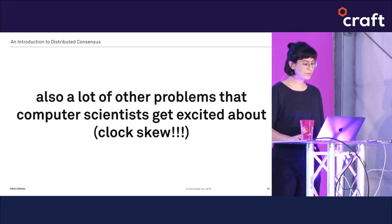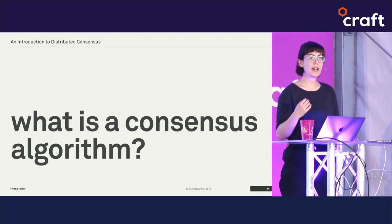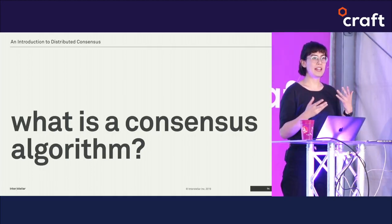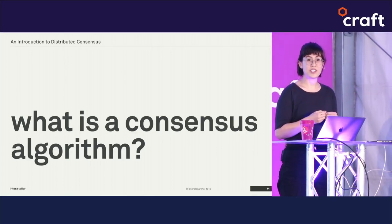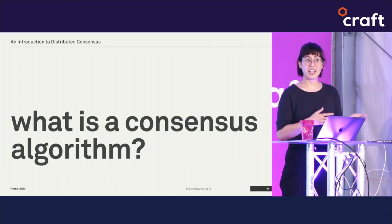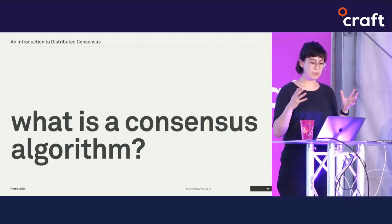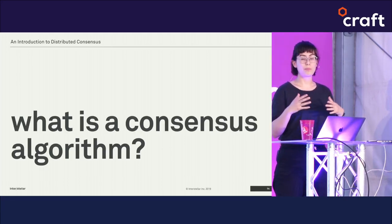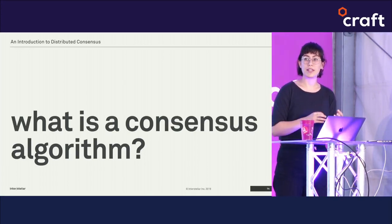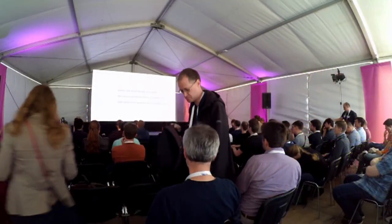Broadly speaking, consensus algorithms are the solution to this problem. At this point you might have an intuitive "know it when you see it" definition of a consensus algorithm, just as you might for blockchain or cloud. There are narrower or broader definitions of the consensus problem, so we can define it in a strong or weak way.